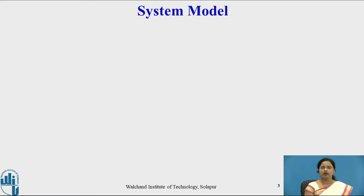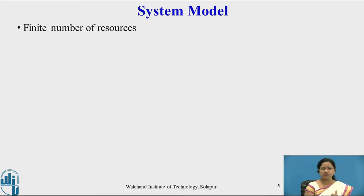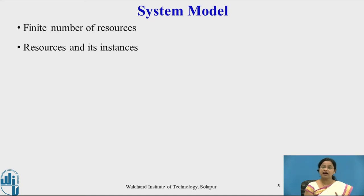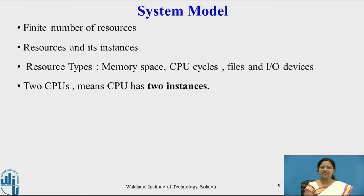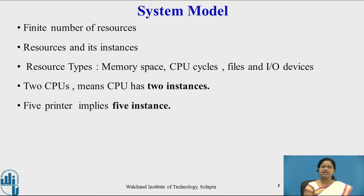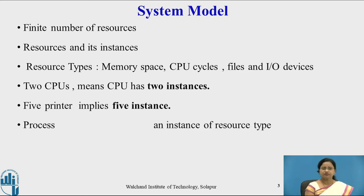Now we will see the system model required for deadlock. In a system, we have a finite number of resources — resources are never infinite. If resources are of the same type, there are different instances of that resource. For example, if we have two CPUs, the resource type is CPU and there are two instances. If we have five printers, there are five instances of the resource type printer.